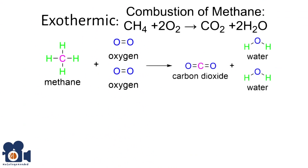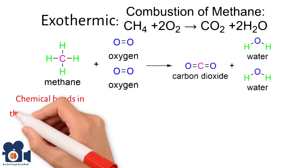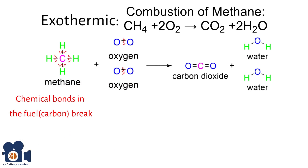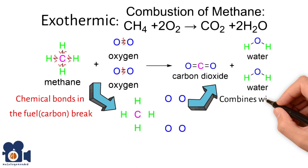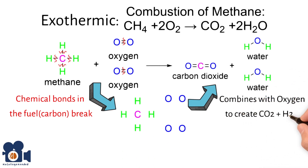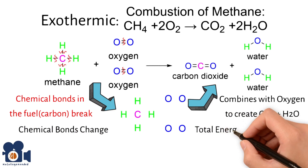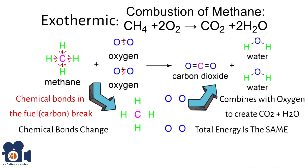During combustion, chemical bonds in the fuel, such as hydrocarbons in wood or gasoline, break as the fuel combines with oxygen to form new bonds in combustion products like carbon dioxide and water. The overall result is a release of energy driven by the rearrangement of the chemical bonds. The first law tells us that even though the chemical bonds change, the total energy within the system and its surroundings remains constant.